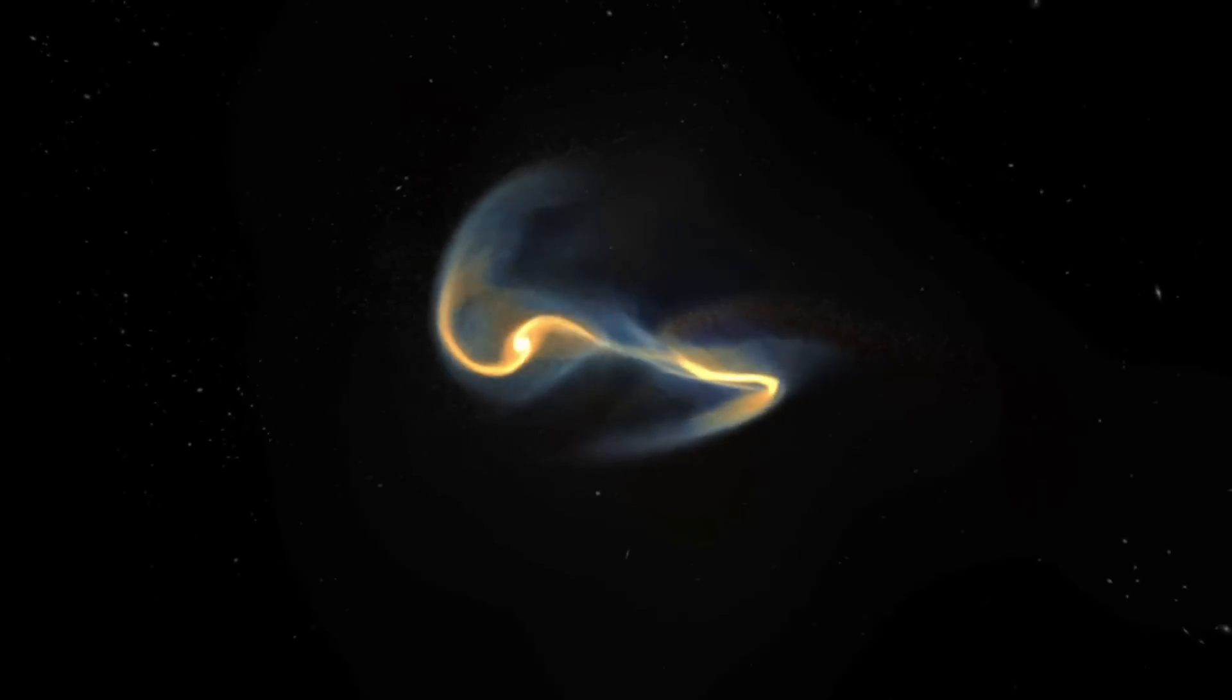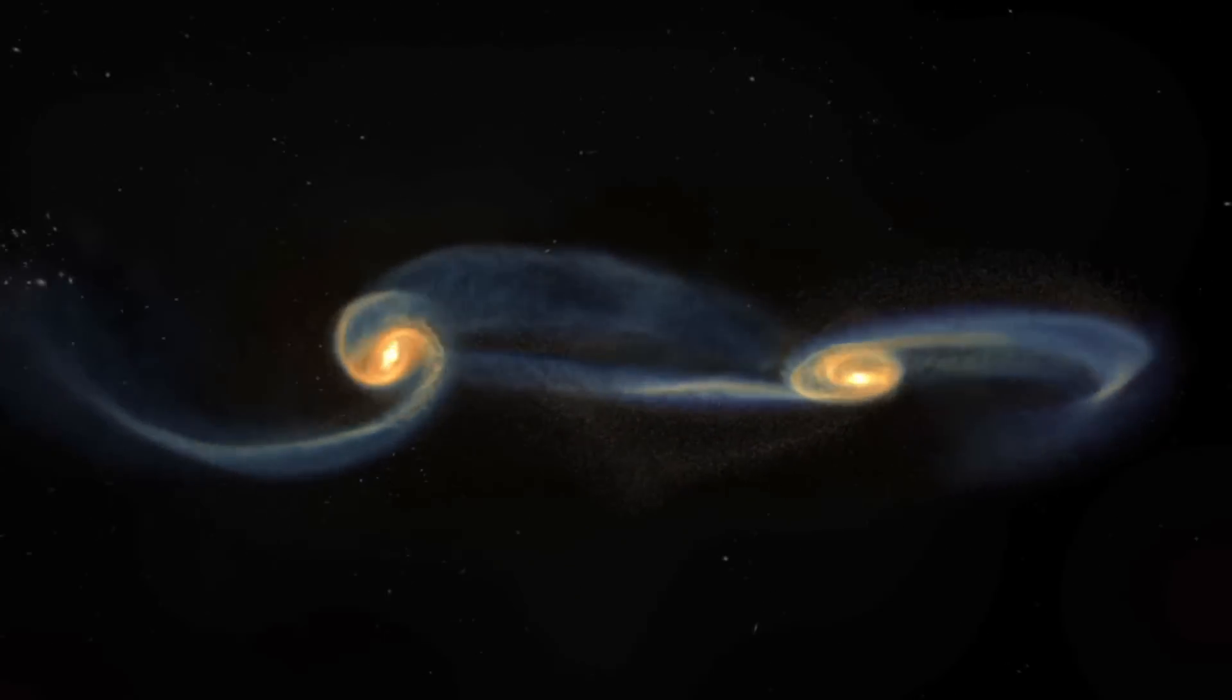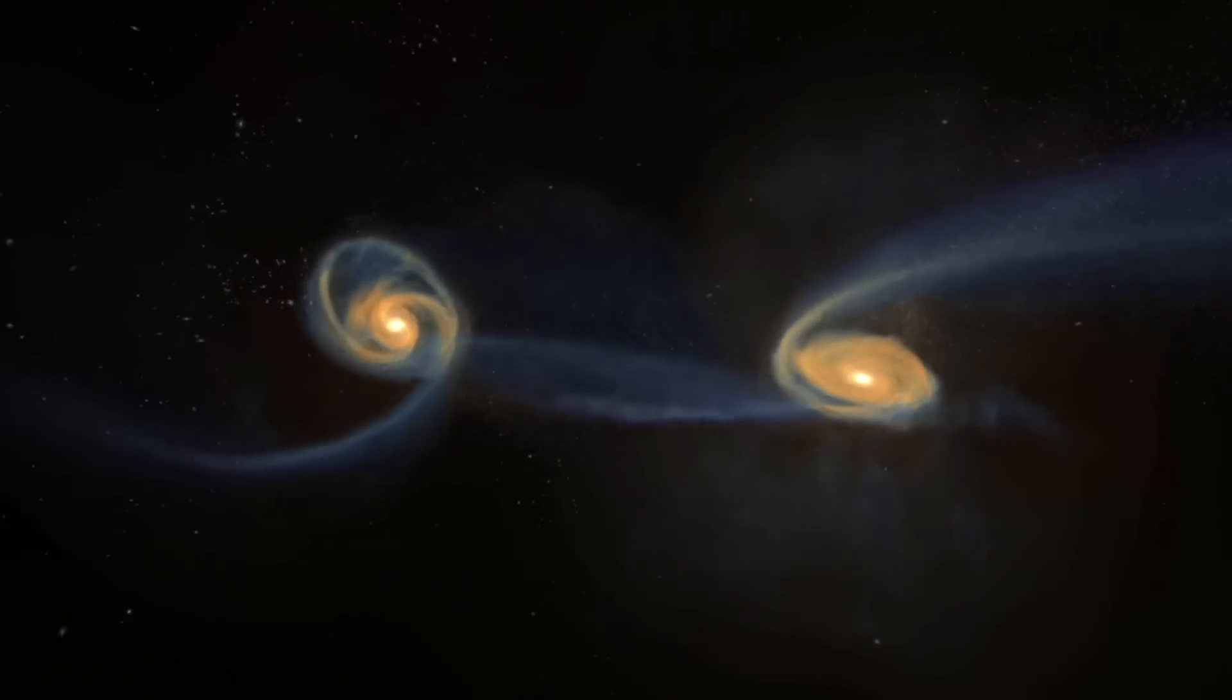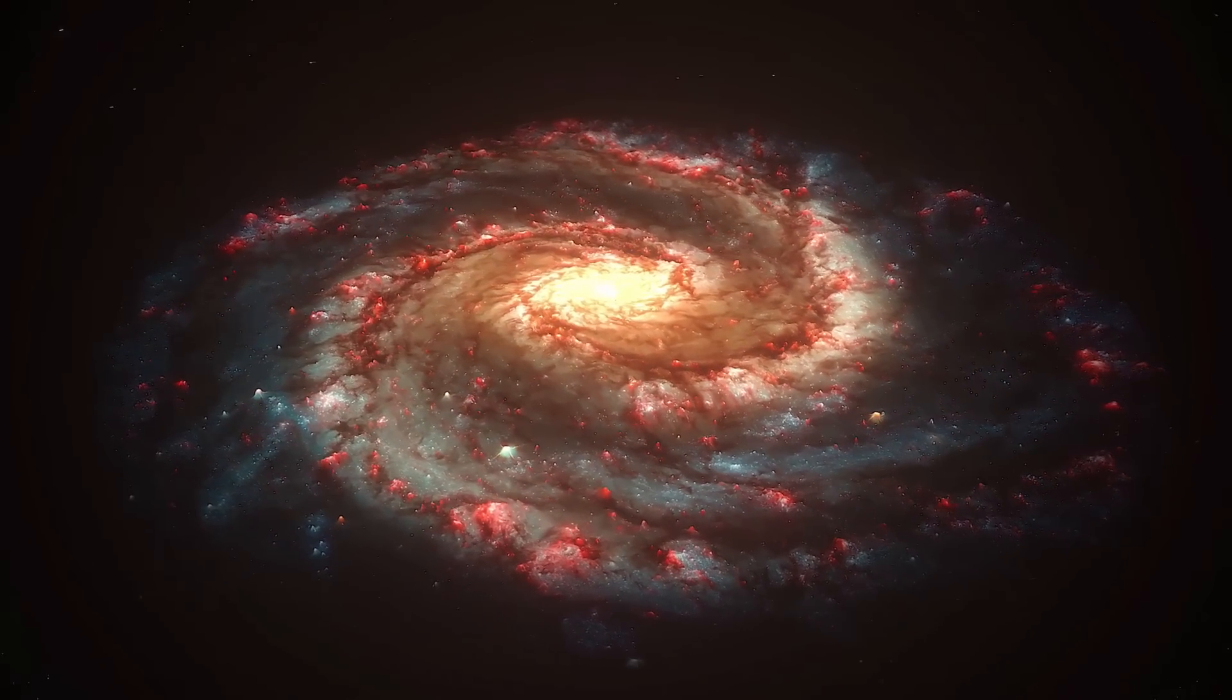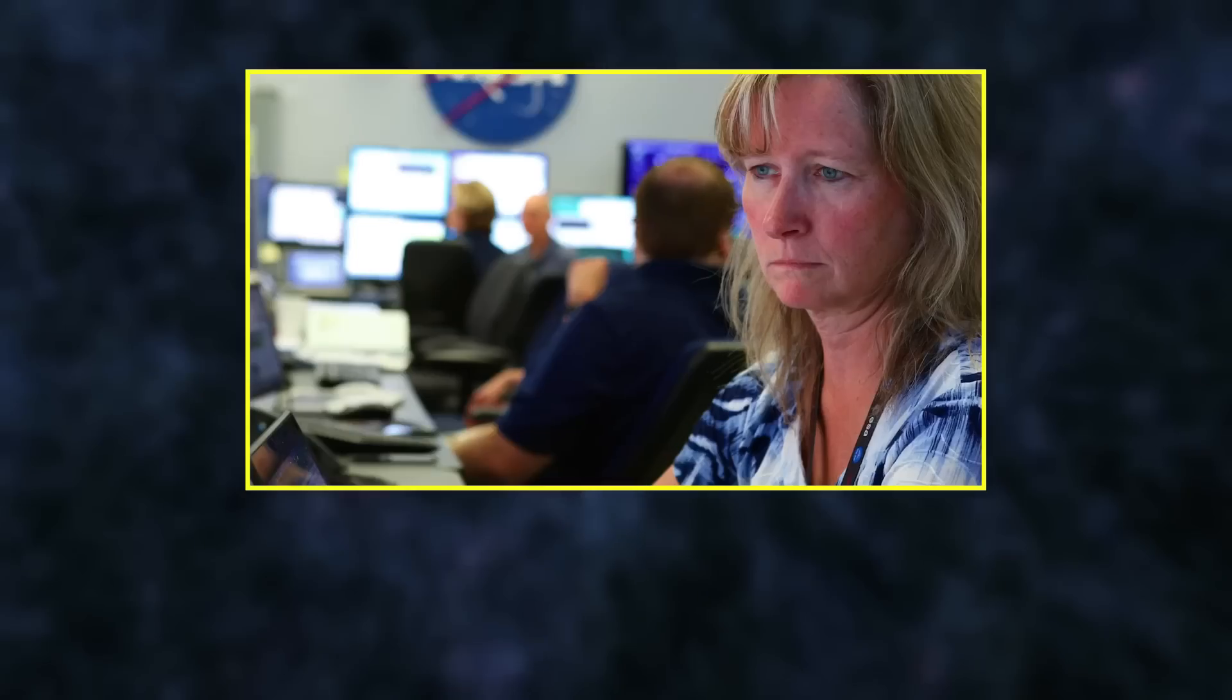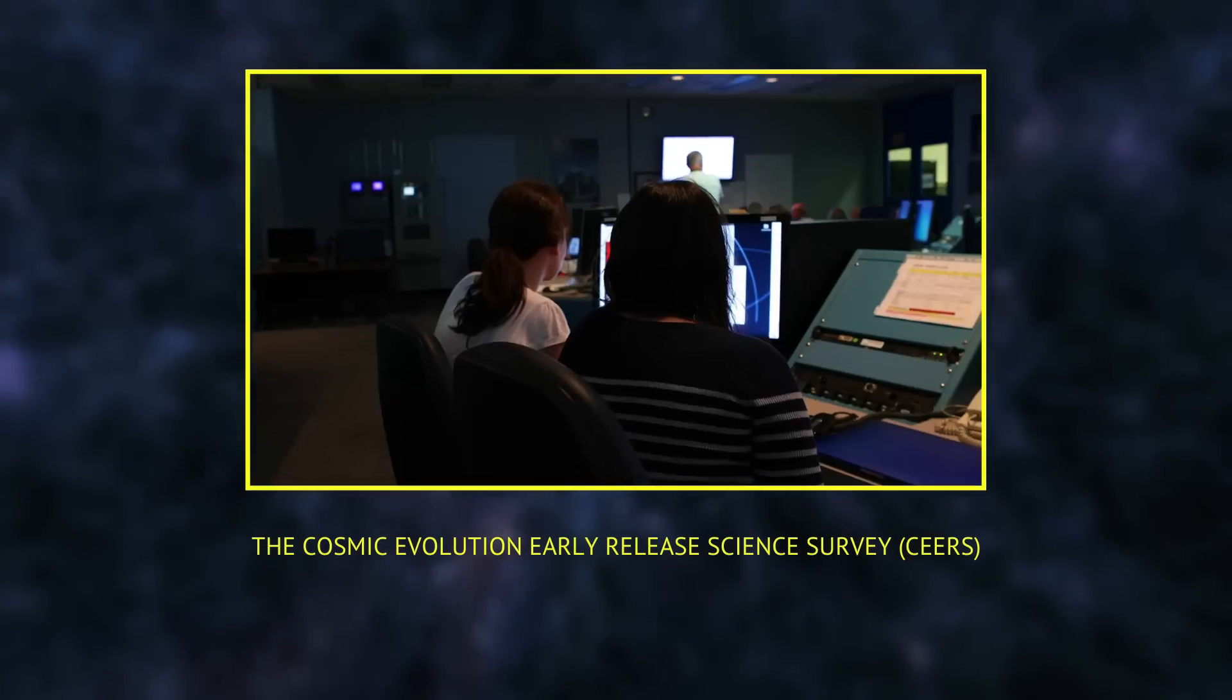Galaxies started out small and grew over billions of years as a result of the merging and accretion of gas and dark matter. A galaxy like our Milky Way, we think, took 1 to 2 billion years to reach adolescence. However, in 2022,